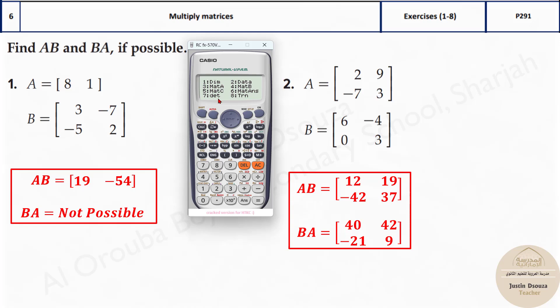Now shift 4, press dimension, and type the matrix B, that is option 2. This is 2 cross 2, that's option number 5. And now we have 3, minus 7, minus 5, and positive 2. Both the matrices are saved now. All you need to do is shift 4, option 3 for matrix A, multiplied by shift 4 and option 4.